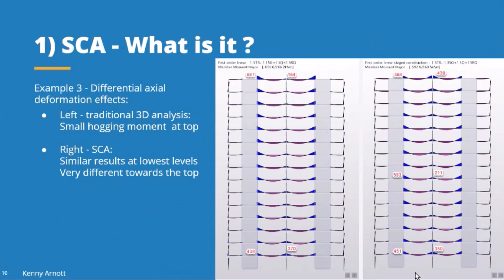In the staged construction analysis of the same 15-story building, deflection is reduced. Results at the lower levels are similar to the 3D analysis, but since members only experience deflection subsequent to their own creation, the cumulative differential deflection effect doesn't become as extreme. Towards the top of the building, bending moment results return to something closer to what would traditionally be expected.